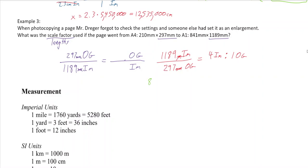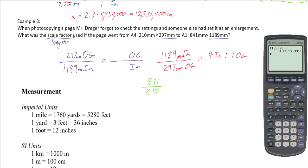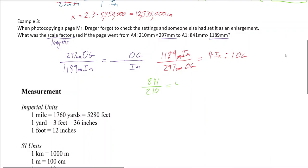Checking the other dimension — 841 divided by 210 — also gives close to four. These are the actual measurements for A4 and A1 paper sizes, so any small discrepancy is a rounding error in the millimeter measurements. The scale factor is 4 to 1.